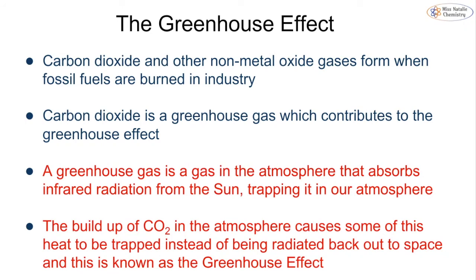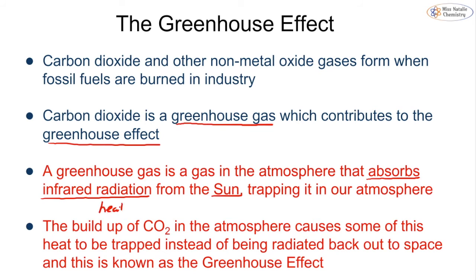The last part of this topic is the greenhouse effect. Carbon dioxide and other non-metal oxide gases are released when fossil fuels are burned in industry — any combustion reaction typically produces these gases. Carbon dioxide is a greenhouse gas, meaning it absorbs infrared radiation from the sun in the form of heat and light. When it absorbs this radiation, it traps it in our atmosphere rather than allowing it to radiate back out into space, causing the atmosphere to heat up.